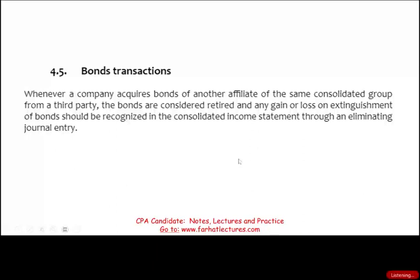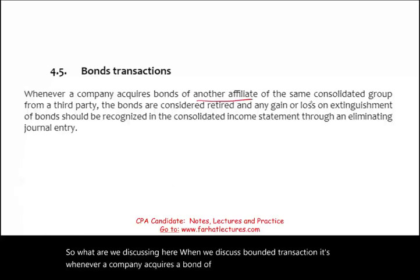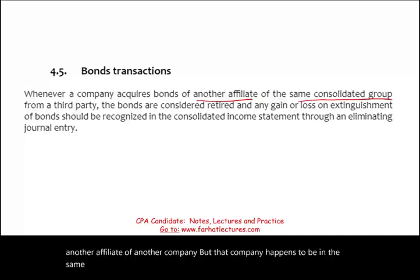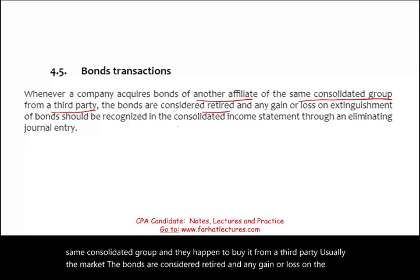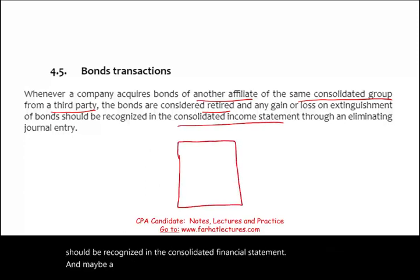So what are we discussing when we talk about bond transactions? It's whenever a company acquires a bond of another affiliate — purchased a bond of another company that happens to be in the same consolidated group — and they buy it from a third party, usually the market. The bonds are considered retired, and any gain or loss on the retirement should be recognized in the consolidated financial statement. A picture will illustrate this concept.